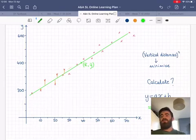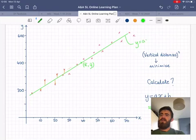So y equals ax plus b is appropriate. a will be the slope, b will be the y-intercept, as usual. And that will be the equation of the regression line.